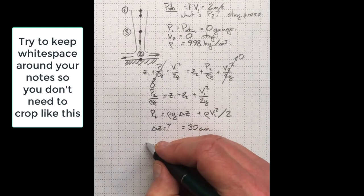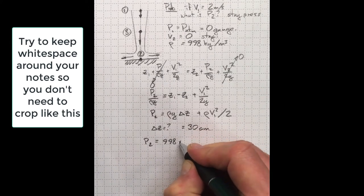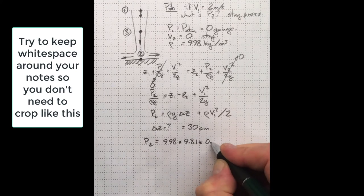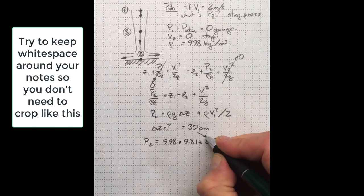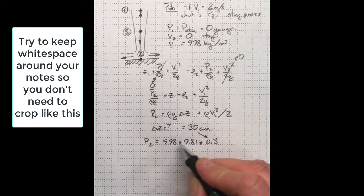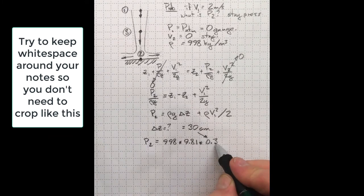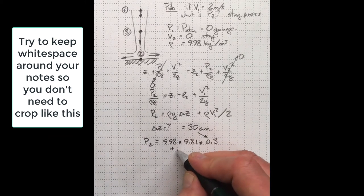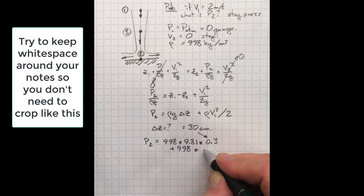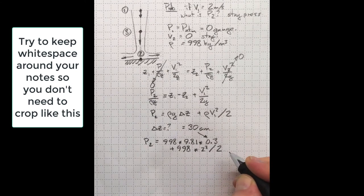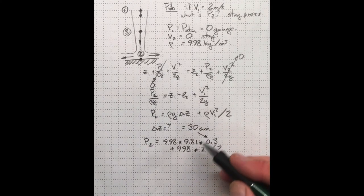So the first term here, density of 998 times acceleration due to gravity, 9.81, and 30 centimeters is 0.3 meters. Then for the velocity term, 998 for density, 2, the velocity at 1, squared, divided by 2 from here.